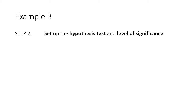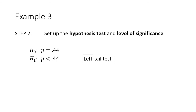Step 2: set up the hypothesis test and state the level of significance. The null hypothesis is that the proportion equals 0.44 — 44% of Americans. The alternative hypothesis, what the researcher wants to show, is that the proportion is less than 0.44. Because we're trying to show the proportion is smaller, this is a left-tail test. The level of significance is 5%, so alpha = 0.05.